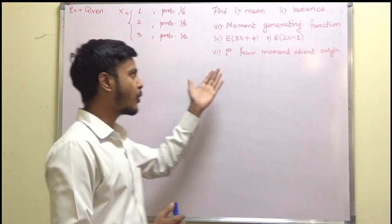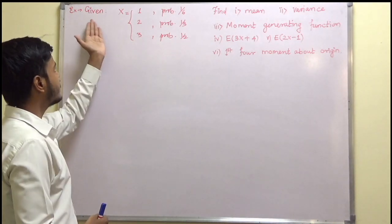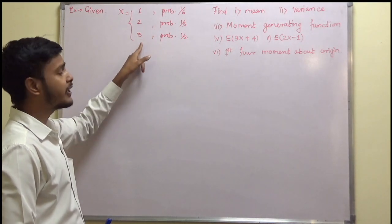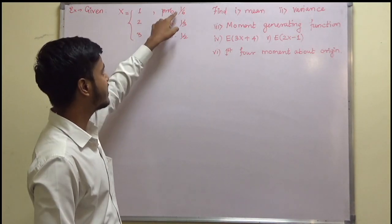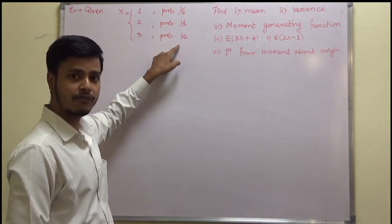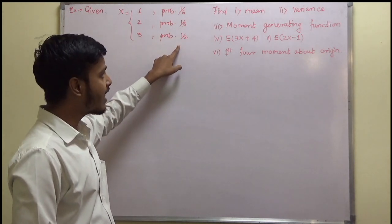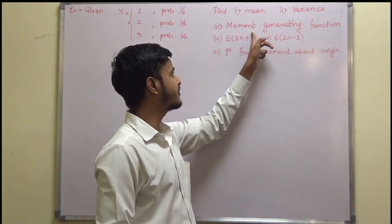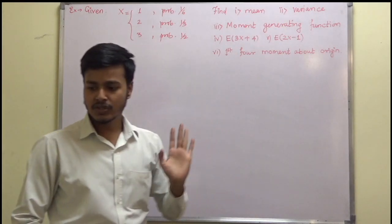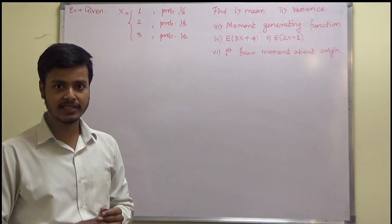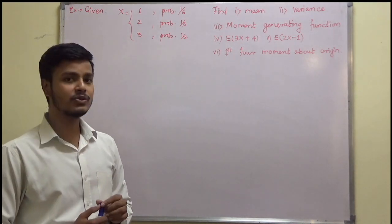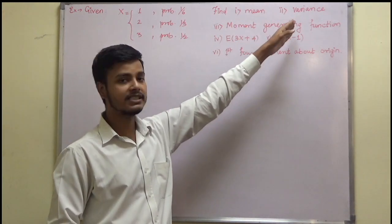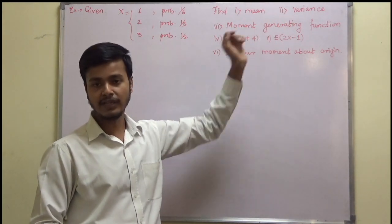So let us see what this problem says. We are given a random variable whose values are 1, 2, 3 and the respective probabilities are 1/6, 1/3, 1/2. What we have to do is find out the mean, variance, moment generating function, and so on. So we will make use of the given information to find all of these.